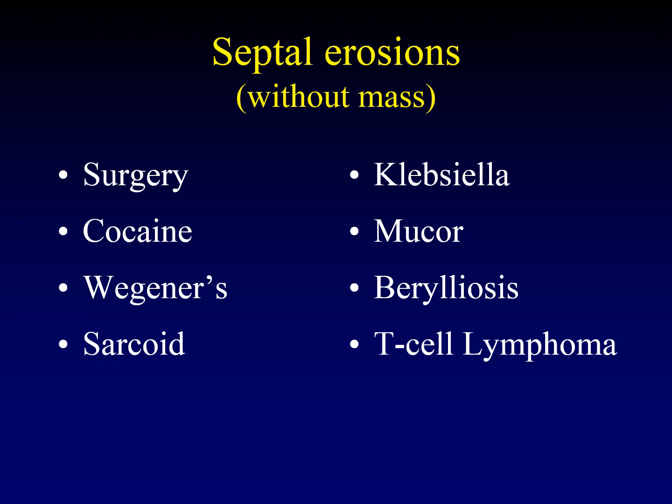This is critical: when you see a patient with septal erosions and they don't have an explanatory history, you need to suggest that it might be T-cell lymphoma and the patient should undergo biopsy to ensure what's going on. Sometimes the history is clear — a known drug abuser — but if they don't have an explanatory history, you have to biopsy to exclude T-cell lymphoma.